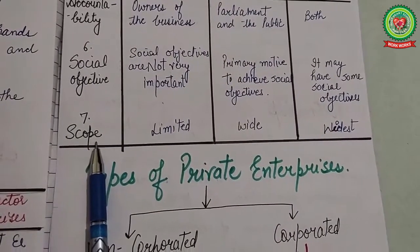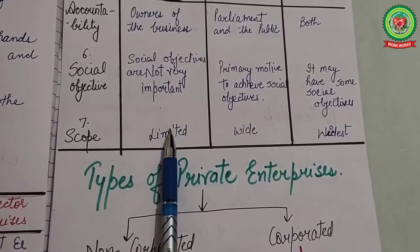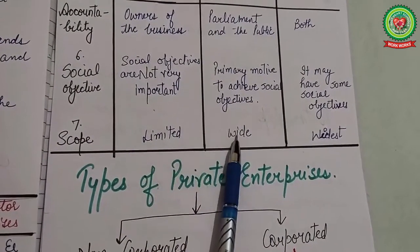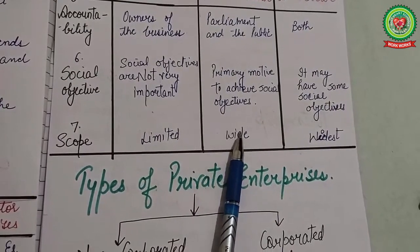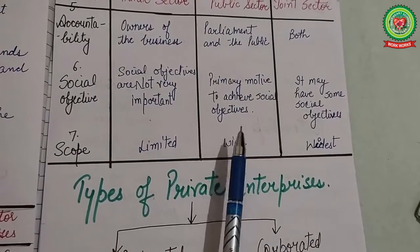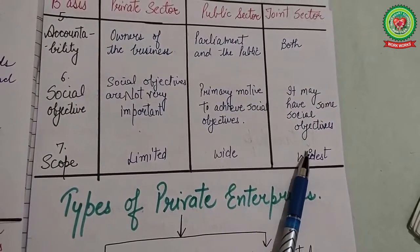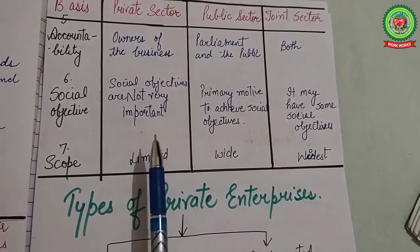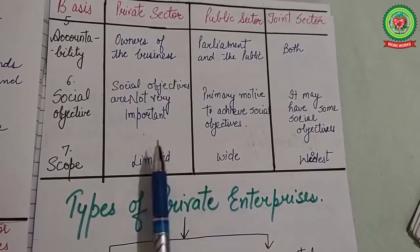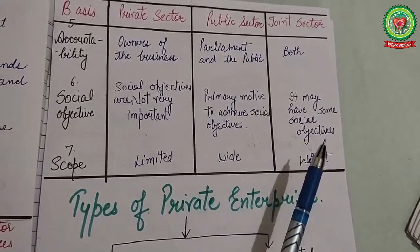The last difference is scope: in the private sector, business scope is mostly limited; in the public sector, business scope is generally wide because it includes government participation; and in the joint sector, business scope is the widest because it involves both the private sector and the government.